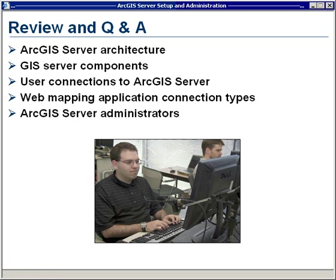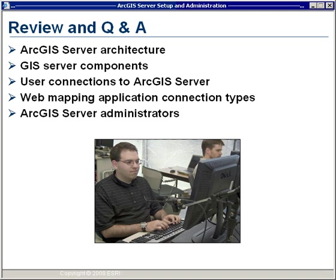Next question comes from Don in Canada, who asks whether ArcGIS Server 9.2 is hard-coded to expect the default website or the inetpub directory, since some clients don't want to put everything on the default website. At 9.2, it is hard-coded to go to the default website in IIS for the .NET version. At 9.3, they're working on ways to use other websites. There is a manual way to do this at 9.2 — if you search our ESRI support website at support.esri.com for knowledge base article number 33314, it'll give you the manual steps to set that up on a non-default website.